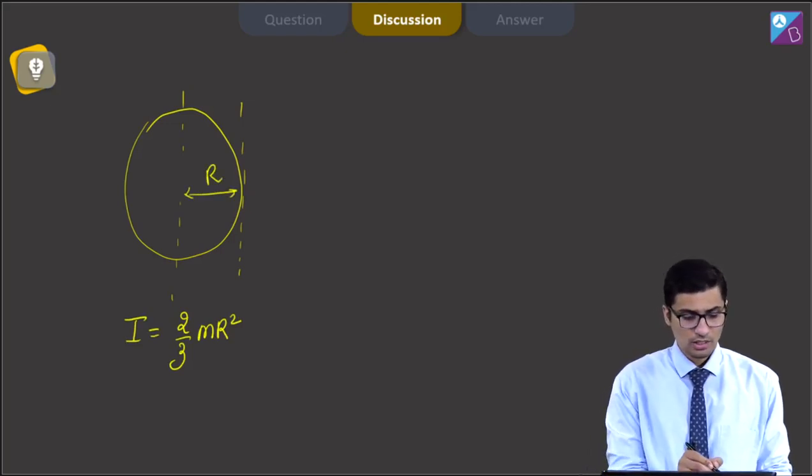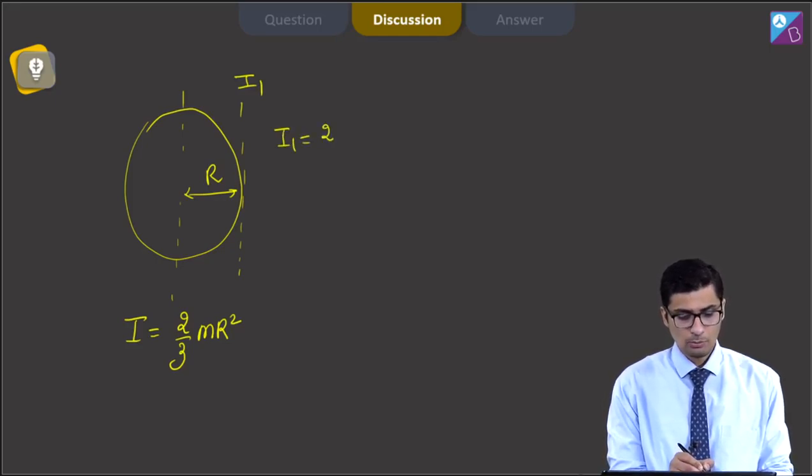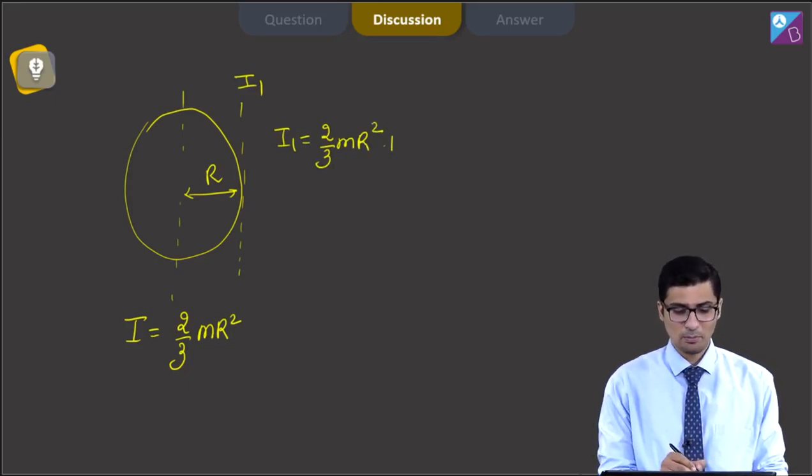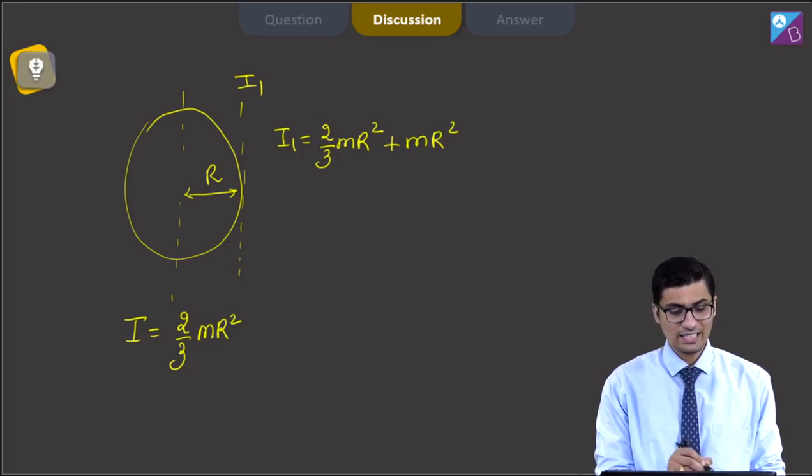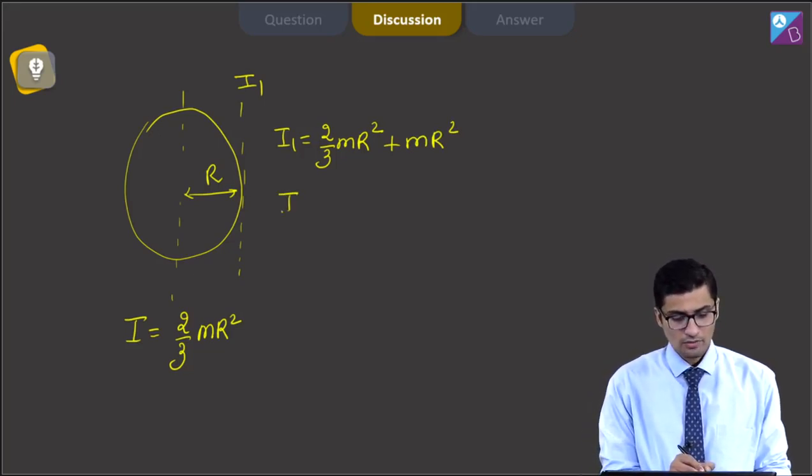Now, as per the parallel axis theorem, if the moment of inertia about this axis is I1, we can write down that I1 is equal to the moment of inertia about center of mass that is 2 by 3 MR square plus MR square, as the distance between these two axis is R. Now furthermore, I1 will be equal to 5 by 3 MR square.